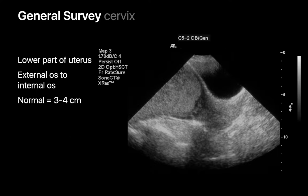The general survey begins with an assessment of the cervix — the lower portion of the uterus. We carefully inspect it from the external os to the internal os and measure the length of the cervix, which should normally be around three to four centimeters.